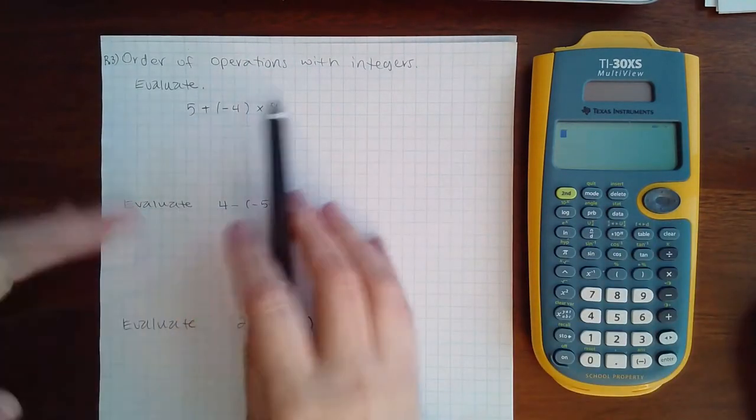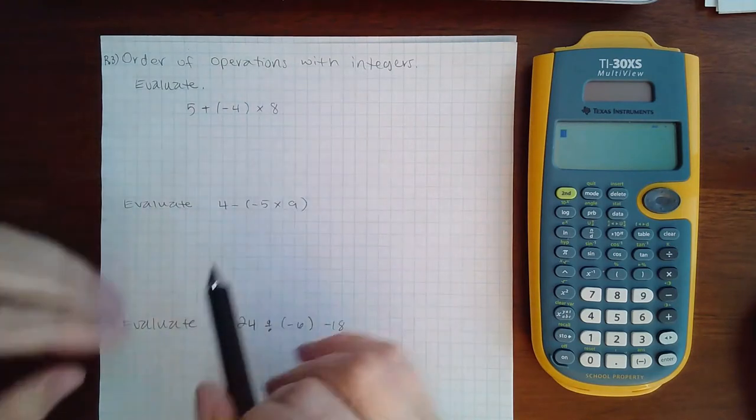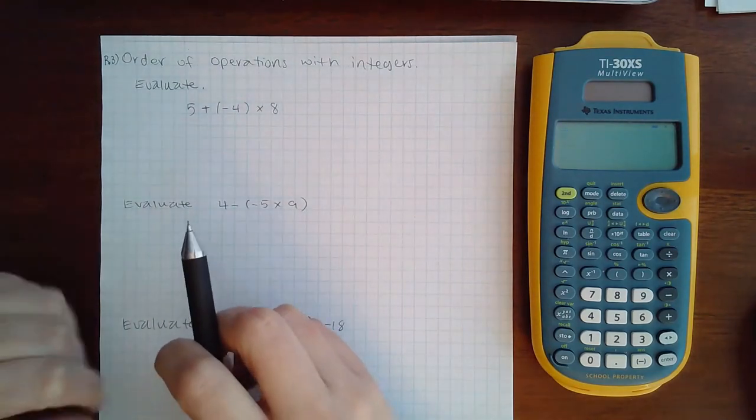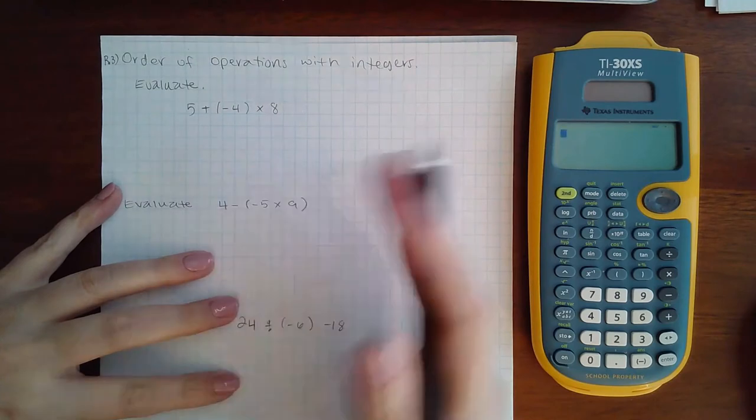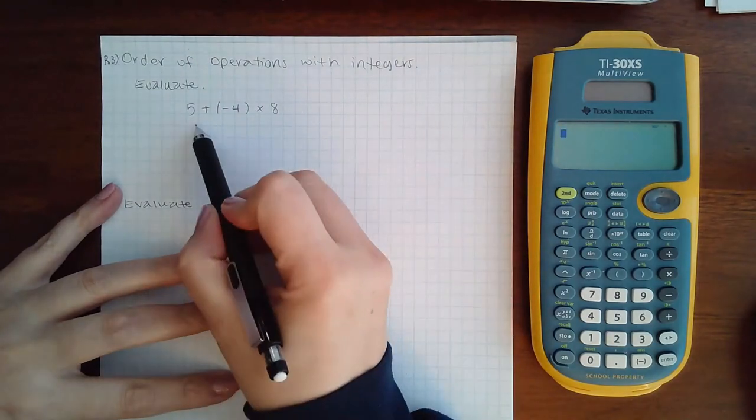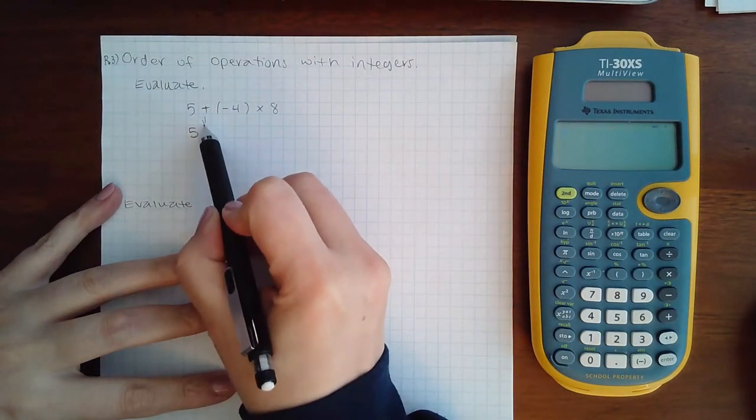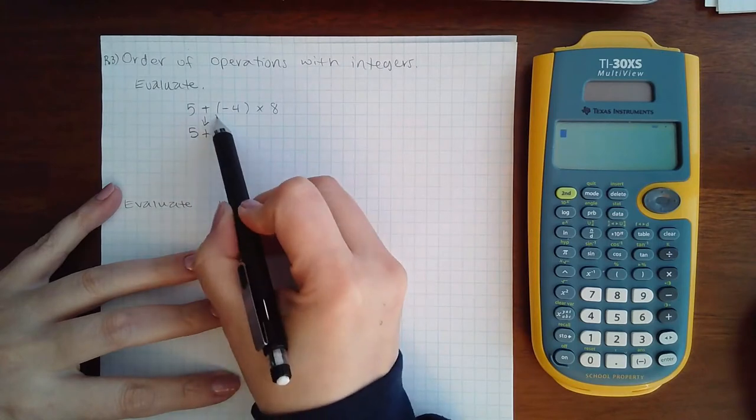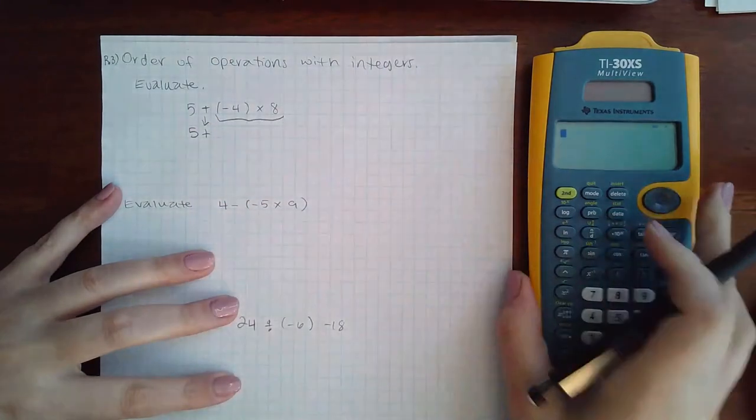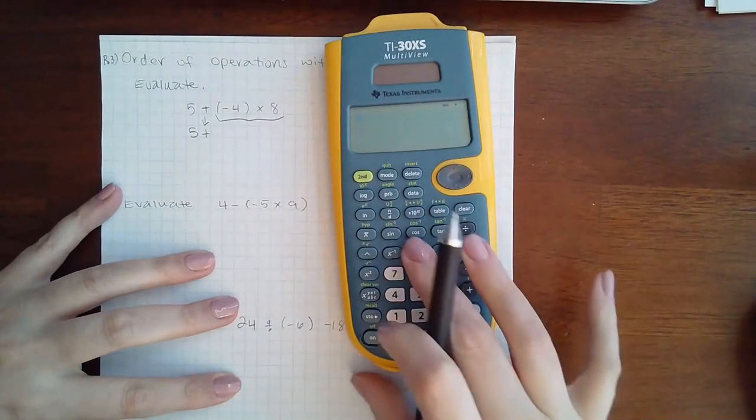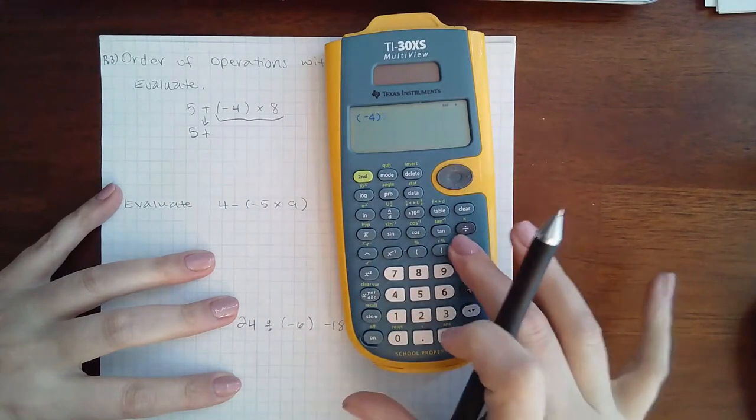There's no exponents, square roots, or absolute values to evaluate. So we move on to multiplying and dividing. Now I'm going to rewrite the 5 plus, which means I need to put that entire expression in my calculator. Negative 4 times 8.